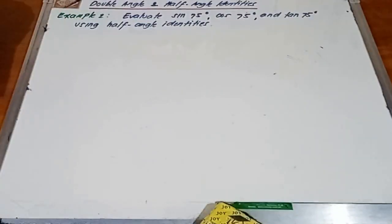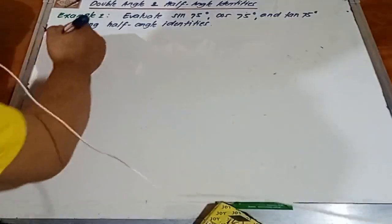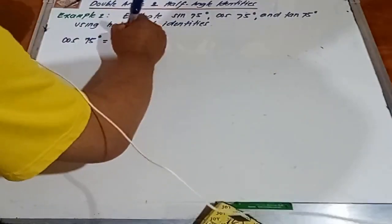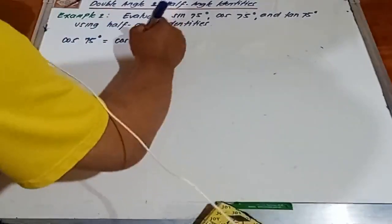Okay, so we have example number 2. This time we're going to determine cosine 75 degrees. So we have cosine 75 degrees can be written as cosine of 150 degrees over 2.